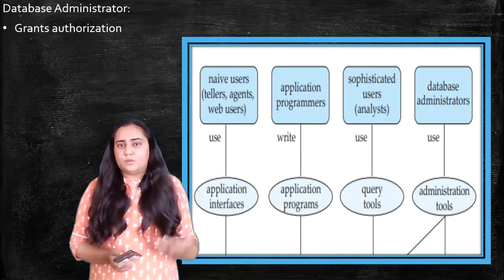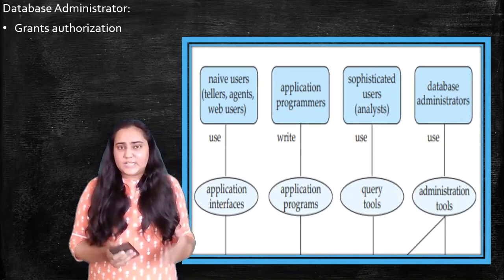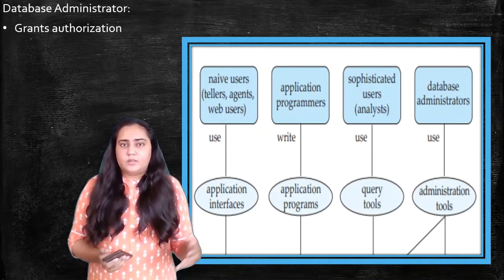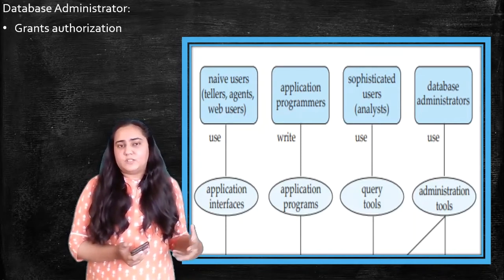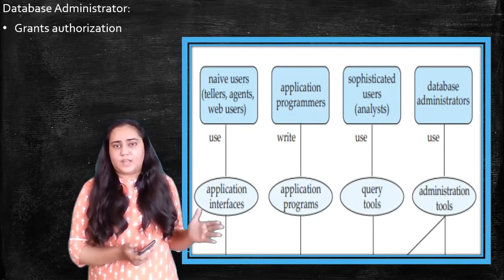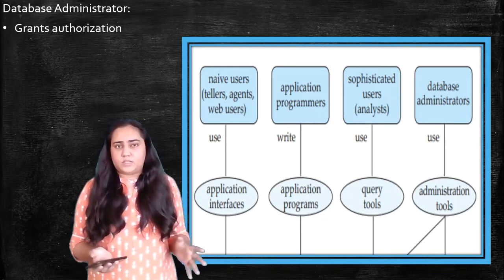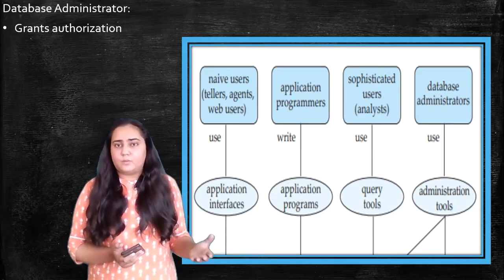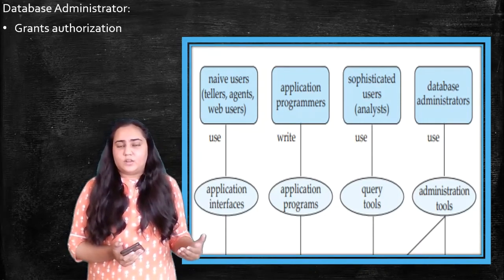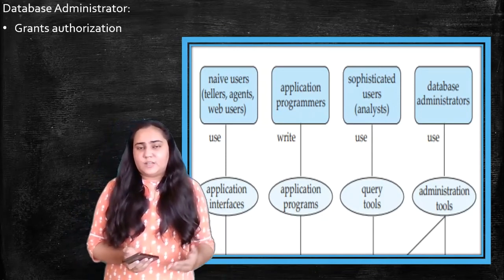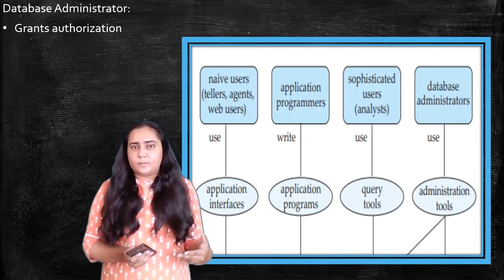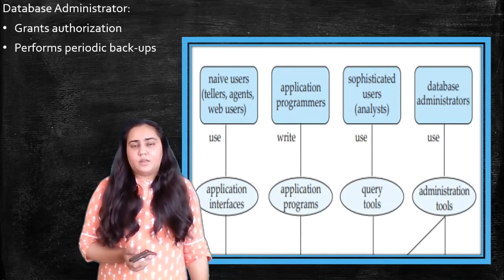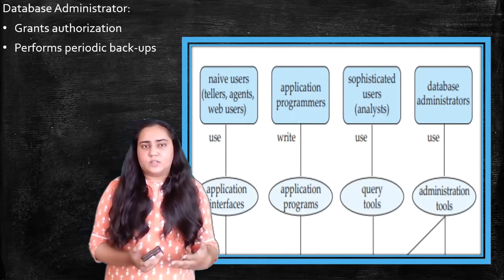Database administrators also grant authorization. They decide who has access to how much of the data. So they can decide if a person is a naive user, then how much data can that person access? Not all the data. The person obviously should not be able to access usernames and passwords of other people. That would be wrong and that would create a huge security risk. So database administrators need to decide what naive users can and cannot access. And other users, of course, not just naive users.